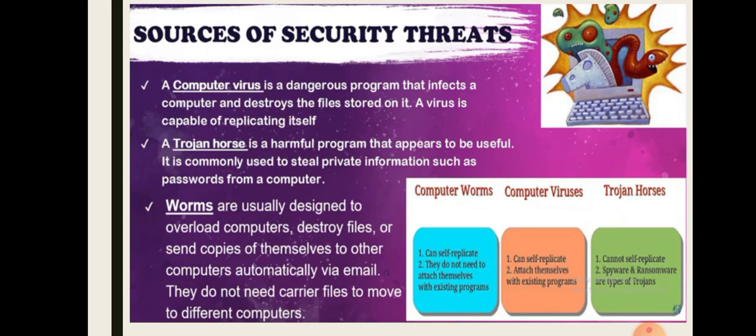The second one is Trojan horses. A Trojan horse is a harmful program — a software that appears to be useful, but when you click on it, it turns out to be a virus. It was first developed to control computer networks from a distance. However, it is now commonly used to steal private information such as passwords from a computer. Hackers use Trojan horses to hack computer systems. A Trojan horse can also delete the most important files from the computer, waste the computer's resources, and force the computer to crash.